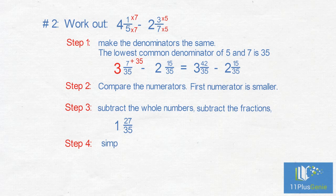Step 4: Simplify where possible. 27 thirty-fifths can't simplify. Our final answer for 4 and 1-fifth minus 2 and 3-sevenths is 1 and 27 thirty-fifths.